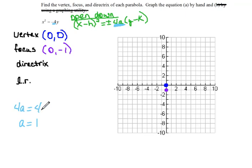We also know that because the latus rectum is 4a units long, that means that it's 4 units long in this case. Half on one side, half on the other side of the focus.